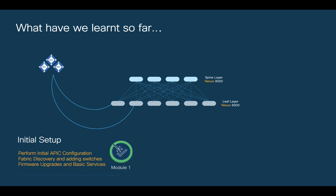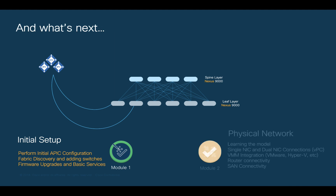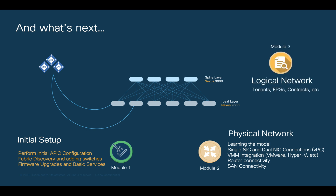In the next module, we will learn how to connect anything to ACI, including things like servers, virtual environments, routers, and more using VPC, access boards, and many others. Then in Module 3, we will learn how to communicate different endpoints across the ACI fabric using concepts like tenants, EPGs, contracts, and so on.